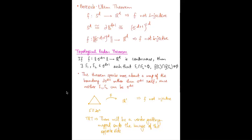Our theorem — the Topological Radon theorem — gives us some extra information on which two points would be getting mapped to the same thing. What it says is: if you have a continuous map f from sigma_{d+1} to R^d, then there is a pair of disjoint faces in sigma_{d+1} whose images intersect.